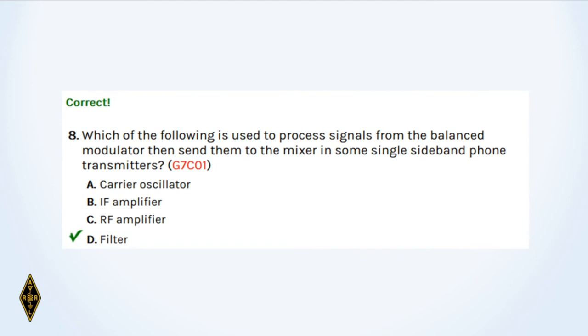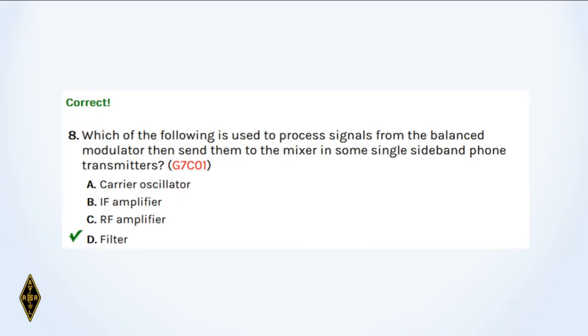And eight: Which of the following is used to process signals from the balanced modulator and then send them to the mixer in some single sideband phone transmitters? A balanced modulator produces double sideband suppressed carrier — an upper and a lower sideband. To get rid of one, you use a filter. This is the filter method of generating single sideband.